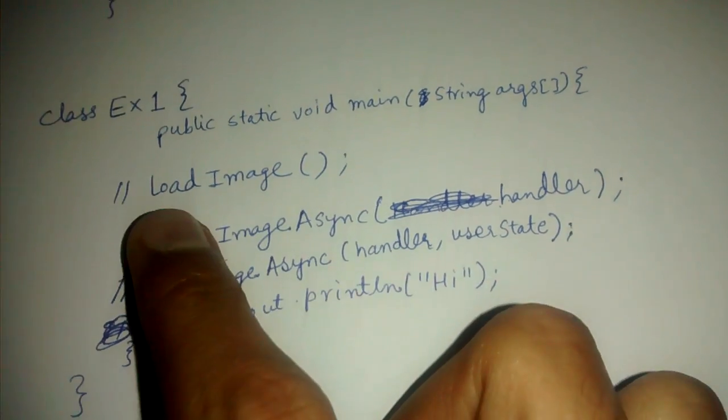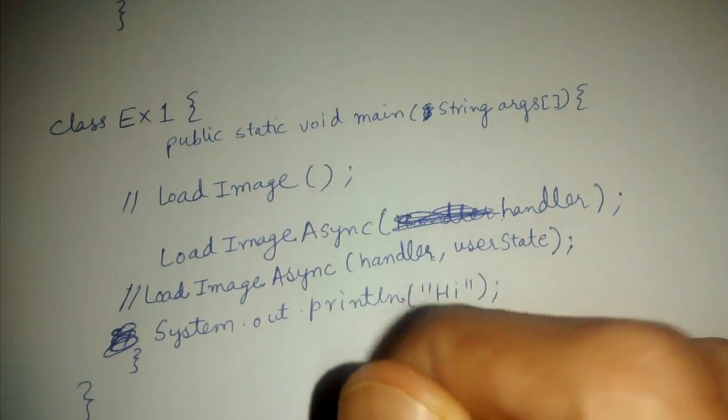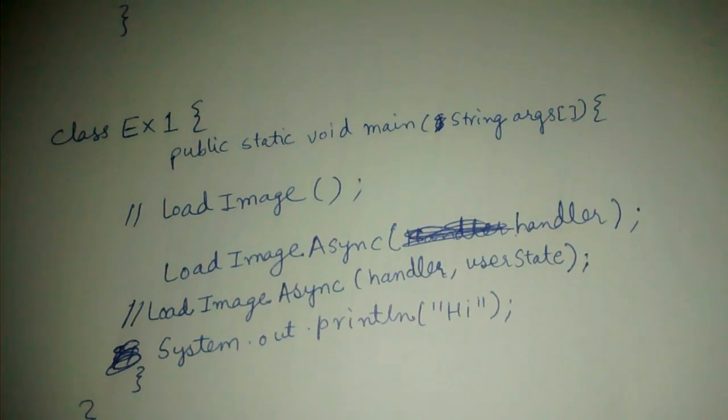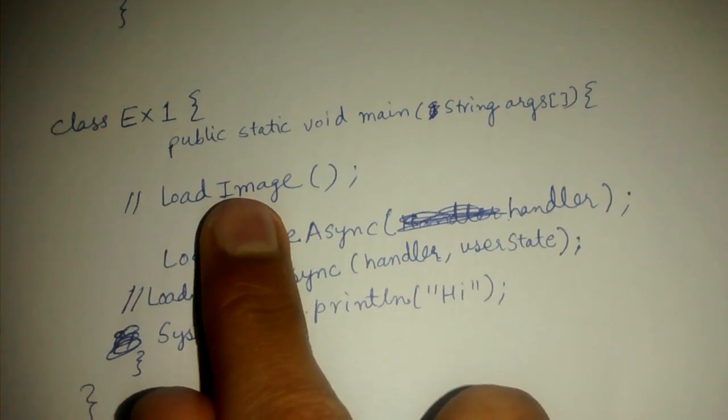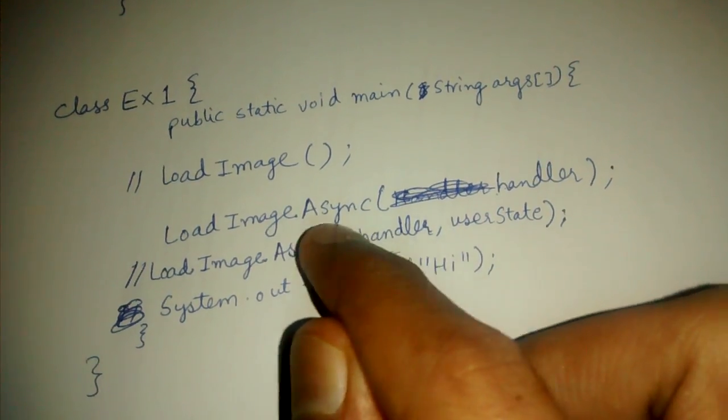So 'high' will be printed. If I use the synchronous load image and the image is quite big, then the program will hang till the image gets loaded. For better user experience, we use async.